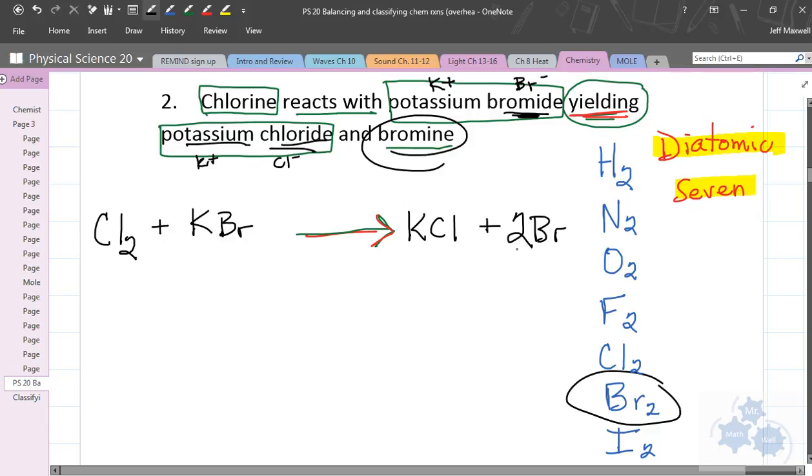And bromine, so bromine is all by itself. Notice that it is also one of the diatomic seven. And so this is Br2. Please don't do this. We'll put the two there. No, not there. You've got to put the two here. So literally, this is like two bromines bonded together. They are bonded together. They are diatomic.